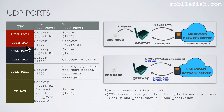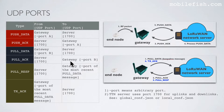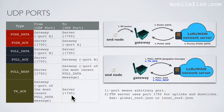For push acknowledge, data goes from server to gateway: server uses port 1700, gateway uses arbitrary port A — the same port as push data. For pull data, data goes from gateway to server using arbitrary port B. For pull acknowledge, server uses port 1700 and gateway uses arbitrary port B. For pull response, server uses port 1700 and gateway uses the port of the most recent pull data message. For transmission acknowledge, data goes from gateway to server using the port of the most recent pull data message, while server uses port 1700.